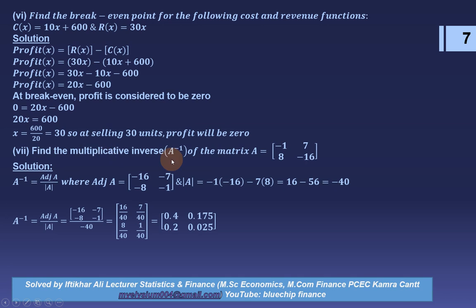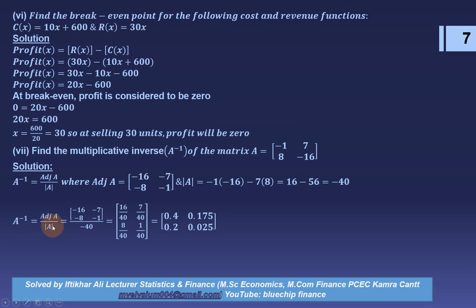Question 7: find the multiplicative inverse of matrix A = [−1, 7; 8, −16]. A⁻¹ = adj(A) / det(A). The adjoint swaps the main diagonal elements and changes the sign of the off-diagonal elements: adj(A) = [−16, −7; −8, −1]. Determinant = (−1)(−16) − (7)(8) = 16 − 56 = −40. So A⁻¹ = [0.4, 0.175; 0.2, 0.025].